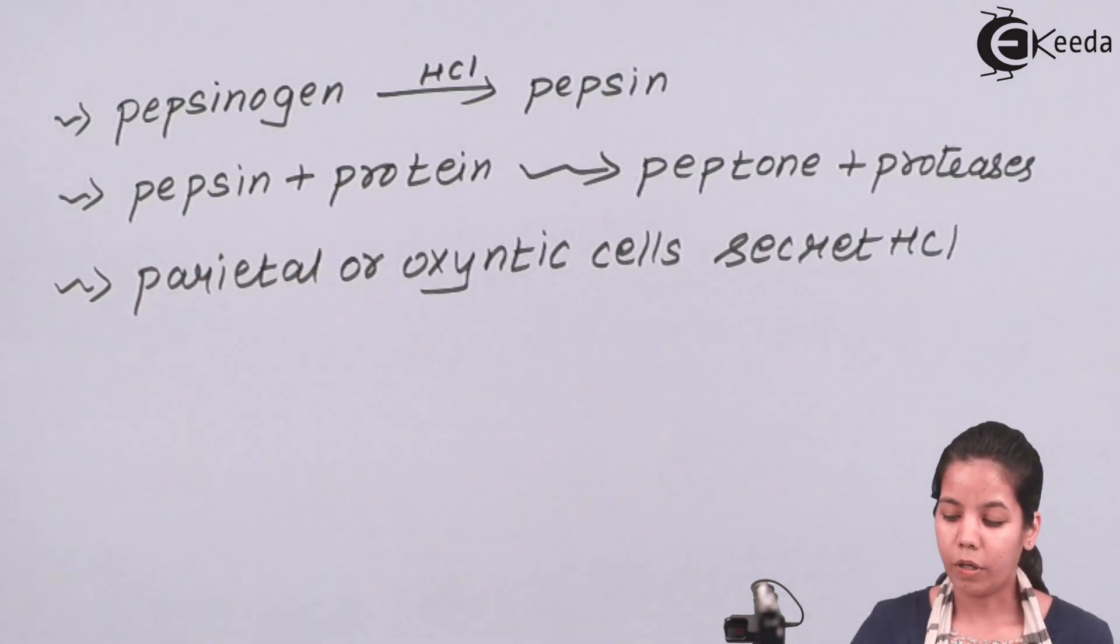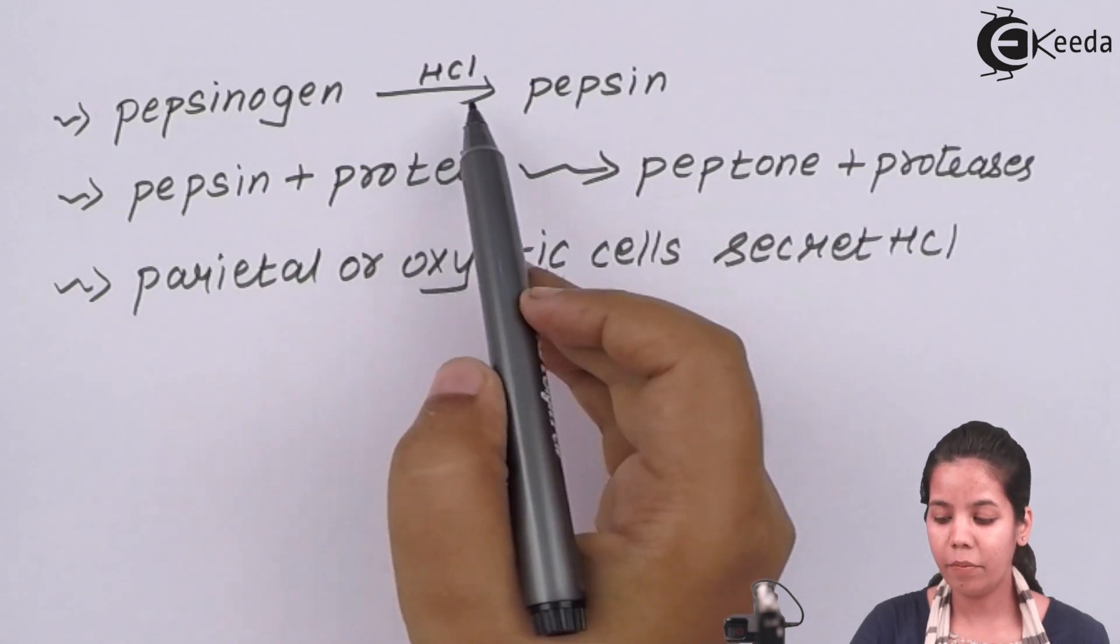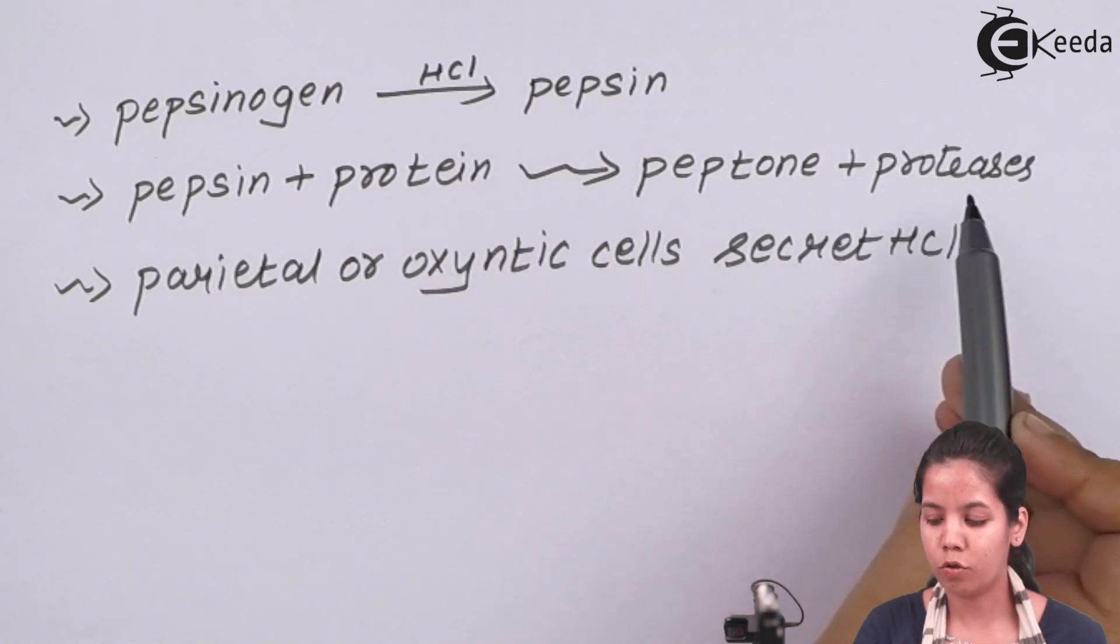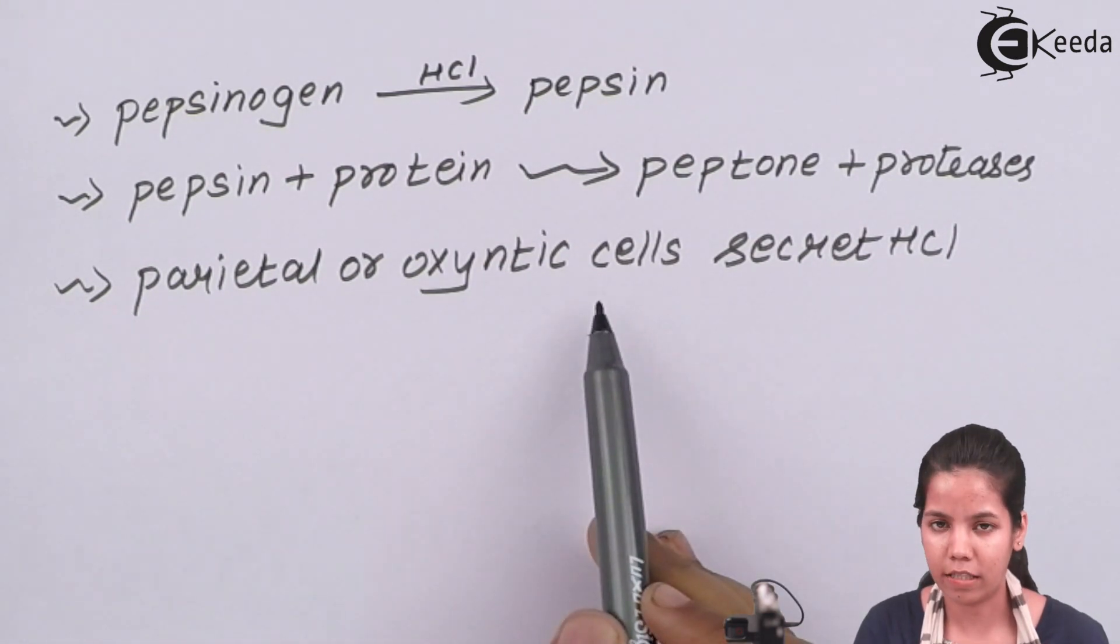Pepsinogen, or you can say HCL, secretes pepsin. And now this pepsin plus proteins in the presence of HCL forms peptones or proteases. And your HCL is secreted by parietal cells or oxyntic cells.